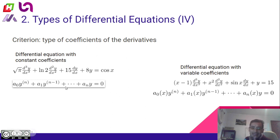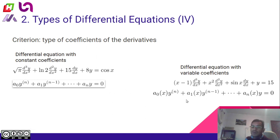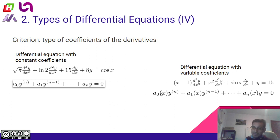The general form for differential equations with constant coefficients is one formula, and the general form for variable coefficients is another. Notice that A₀(x) is a function — that is why we call them variable coefficient equations, because we have variable functions as coefficients.